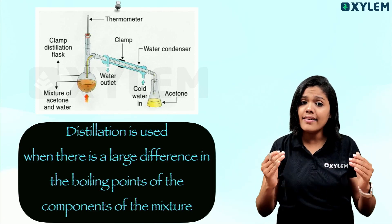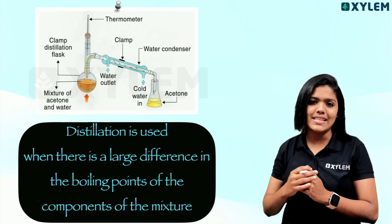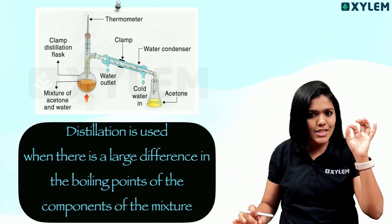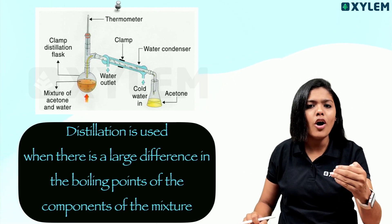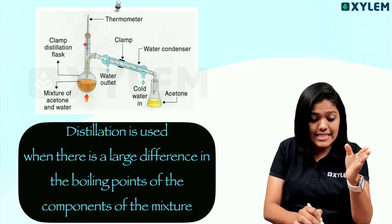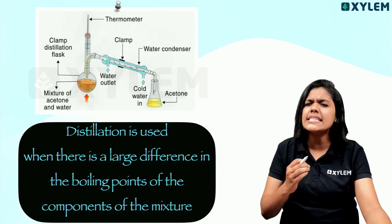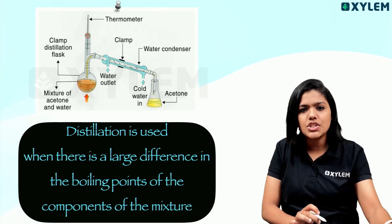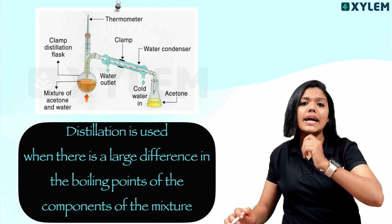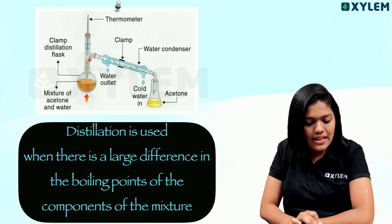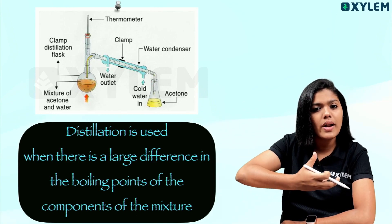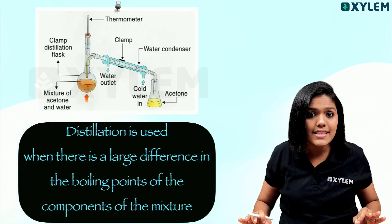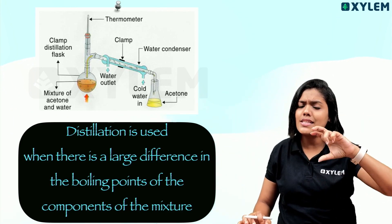So in distillation, we separate the mixture. The boiling point of acetone is 56 degrees Celsius and water is 100 degrees Celsius. When we heat to the temperature — 56 degrees Celsius — the acetone vapors are produced. We put them through the condenser and we separate the acetone and the water, because the boiling point of water is 100 degrees Celsius.